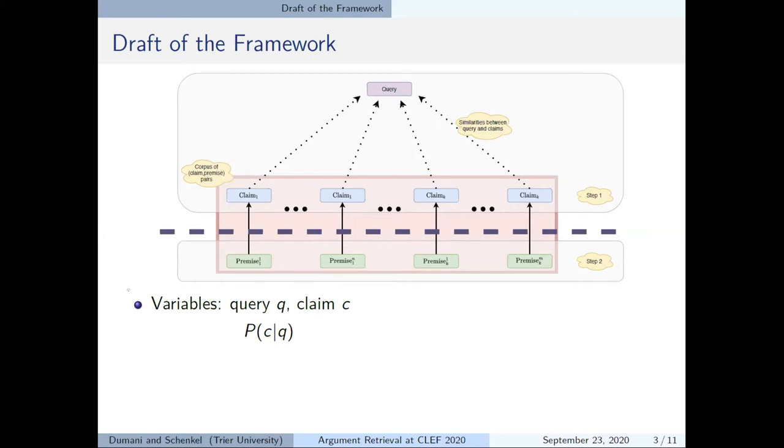And in the second step we consider only those premises with claims similar to the query, in other words they are above a certain threshold. Now let delta be argument quality aspects or dimensions that are of interest to the user. We define the probability that the user picks a premise p from a claim c among all its premises, preferring those that are of high quality in all argument quality dimensions in delta as here shown. And combining the two components we get the probability that the user picks a premise for the query with regard to the argument quality dimensions.